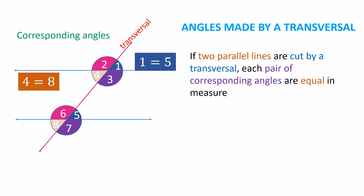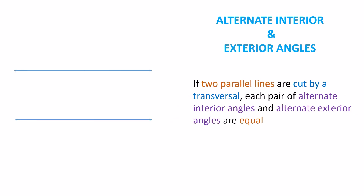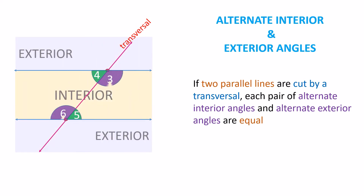The corresponding angle pairs are: 4 and 8, 3 and 7, and 2 and 6. Alternate interior and exterior angles: If two parallel lines are cut by a transversal, each pair of alternate interior angles and alternate exterior angles are equal.